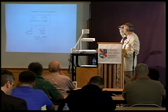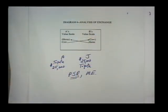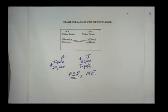At the top there you see A's value scale. A has a cow and values a horse, which he does not have, more than the cow. And B has a reverse valuation — B happens to have the horse, but values a cow more highly. Given that precondition is satisfied, the exchange takes place. Each person gets something they value more for something they value less in exchange.